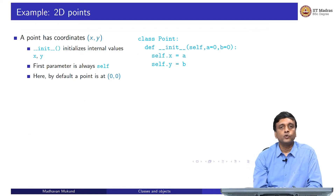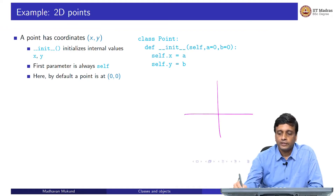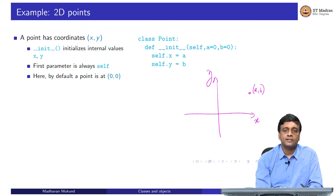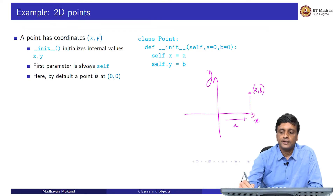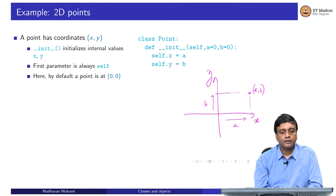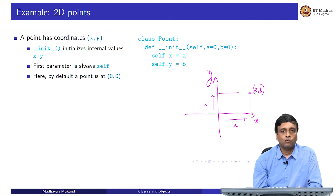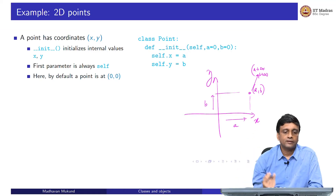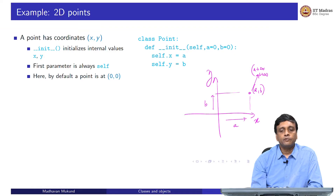Let us look at a concrete example: geometric points. A geometric point has an x coordinate a and a y coordinate b, which says that I am a distance a from the origin in the horizontal direction and b in the vertical direction. I want to have a way of storing these points and manipulating them — for example, I might want to shift a point to a new position by moving it two steps right and four steps up, a transformation called translation. In Python, we use a class definition to do this.